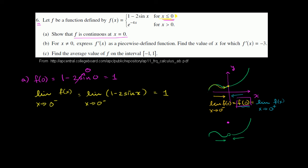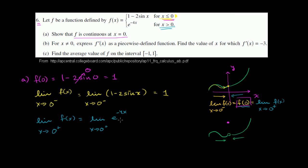Now let's find the limit as x approaches 0 from the right of f of x. Here we're dealing with values of x greater than 0, so we use the second case: the limit as x approaches 0 from the right of e to the negative 4x. This is a continuous function, so this equals e to the negative 4 times 0, which is e to the 0, which is 1.